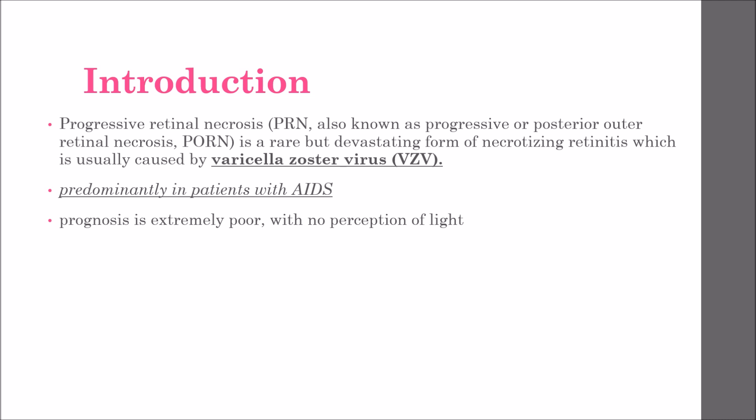Progressive retinal necrosis (PRN), also known as progressive or posterior outer retinal necrosis, is a rare but devastating form of necrotizing retinitis usually caused by Varicella Zoster Virus. It occurs predominantly in patients with acquired immunodeficiency syndrome but may be associated with other immunocompromised states, particularly drug-induced states. The prognosis is extremely poor, with no perception of light in more than half of patients.